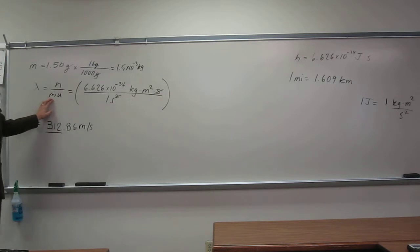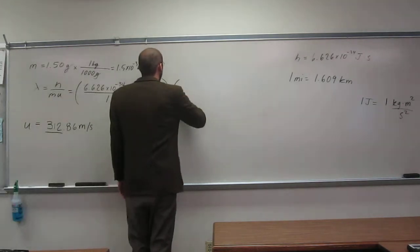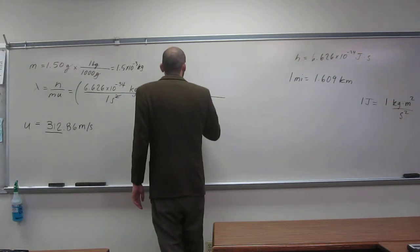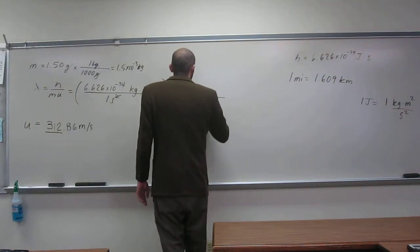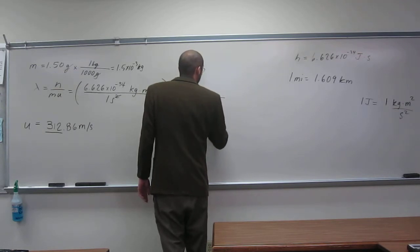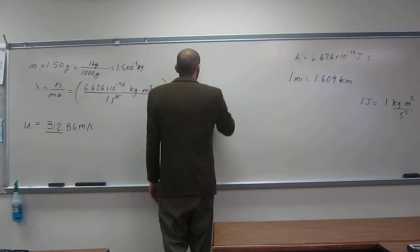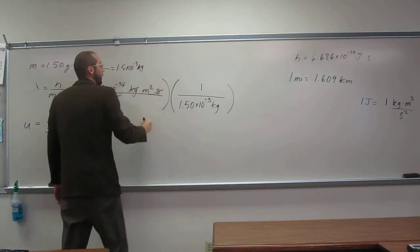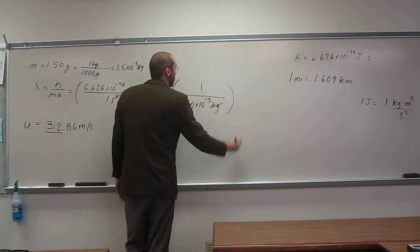Now we've got one over mass. Let's just multiply it out like we normally like to. So what's our mass? 1.50 times 10 to the negative 3 kilograms. Like that. So that's going to cancel there.